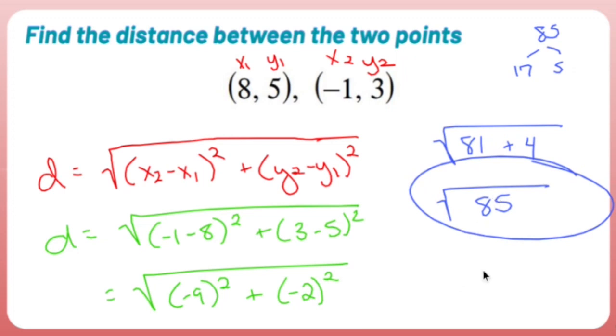Now, if you had a teacher that said, well, what is that as a decimal? It would be 9 point something. Cause I don't know what the square root of 85 is, but I do know that the square root of 81 is 9. So something that's bigger than 81 is going to be something that's bigger than 9.